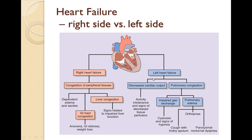In left-sided heart failure, we have backing up into the pulmonary veins, causing pulmonary congestion that leads to pulmonary edema. You'll see coughs with froth and sputum, and paroxysmal nocturnal dyspnea — particularly at night when sleeping, a painful inability to breathe. The impaired gas exchange leads to hypoxic conditions. In terms of decreased cardiac output, you'll have activity intolerance and signs of decreased tissue perfusion. Additionally, pulmonary congestion leads to increased carbon dioxide levels — this is crucial to understand.